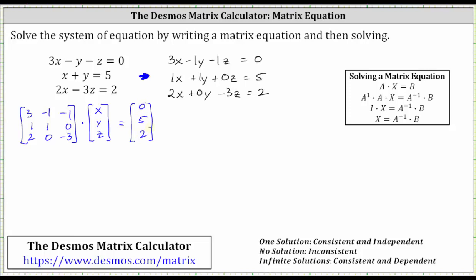So now we have our matrix equation. Looking at our notes, this equation is in the form of A, where matrix A is the coefficient matrix, times matrix X, which is the variable matrix, equals matrix B, which is the constant matrix.